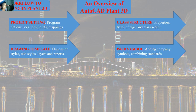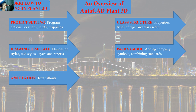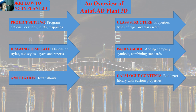In the P&ID symbol section we will add the company symbols. In the annotation section we will set the text columns used for piping layout and piping isometric drawing. In the catalog content, as mentioned before, we will build the part library with custom properties.